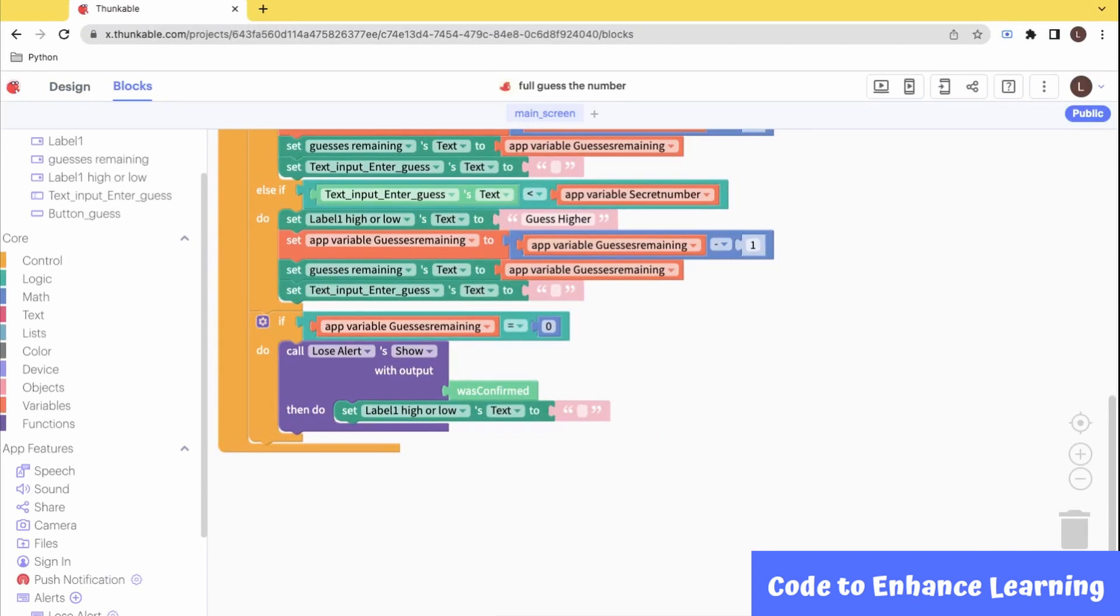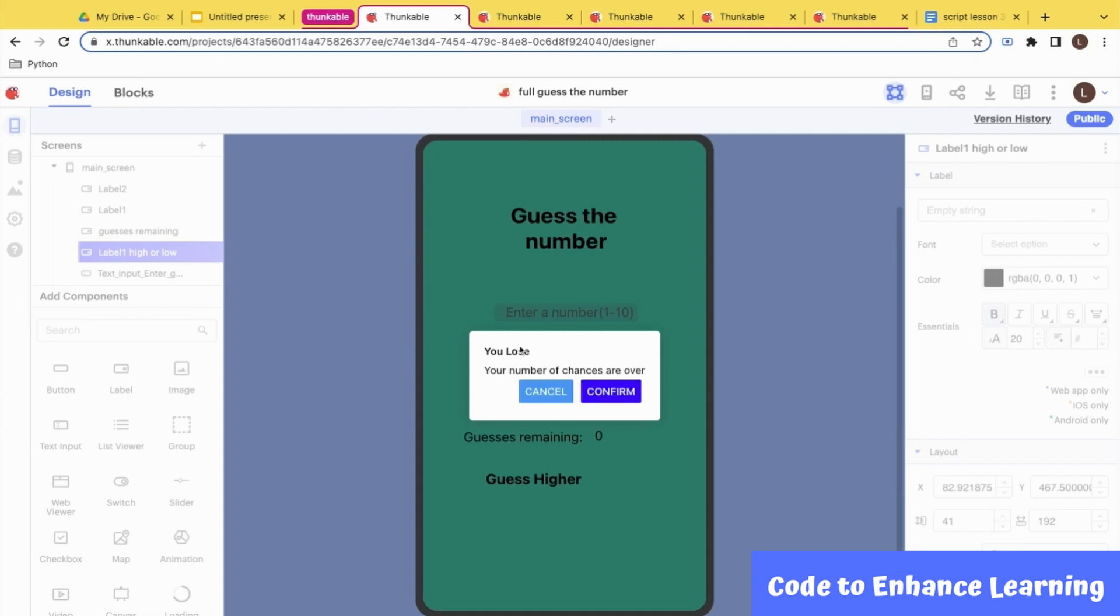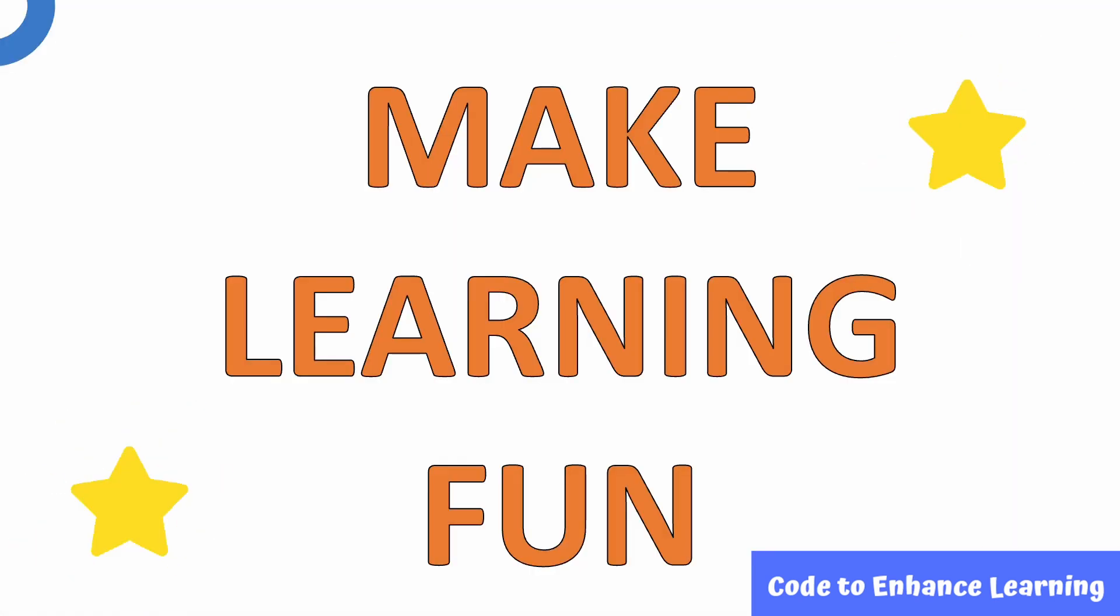Now, let us test the code that we have written. So, let me just guess a number. Let's take 6. It tells me to guess lower. So, I am going to guess the number 4. It tells me to guess lower again. So, I am going to guess the number 1. And I have lost. And the program works. So, that's our program which is working perfectly fine. Try using this app to teach your younger friends and siblings and help them to learn number comparison in a fun and entertaining way. We hope you enjoyed making this simple game application with us.